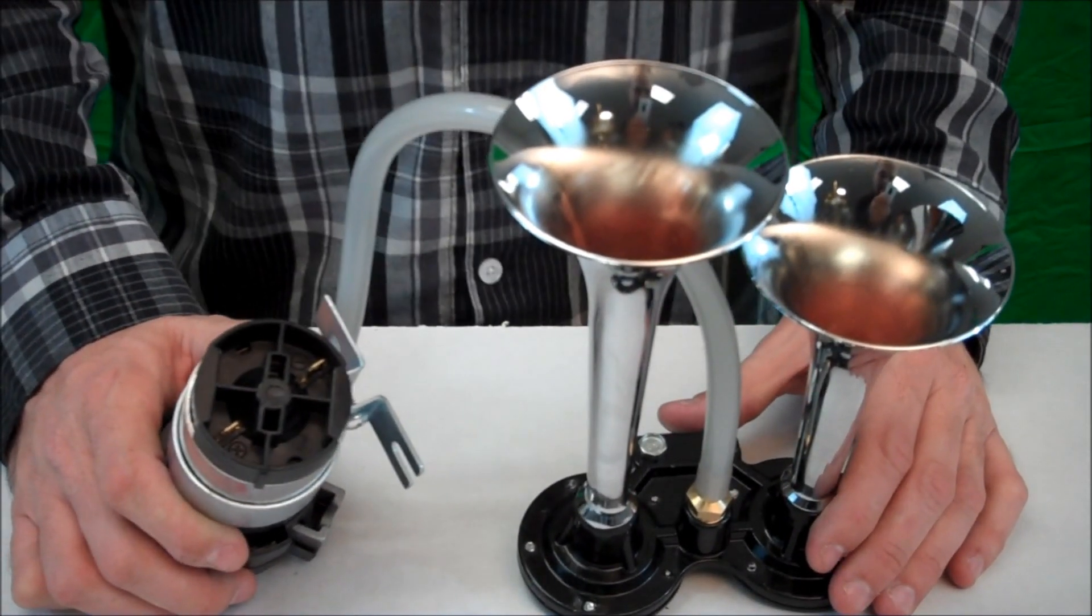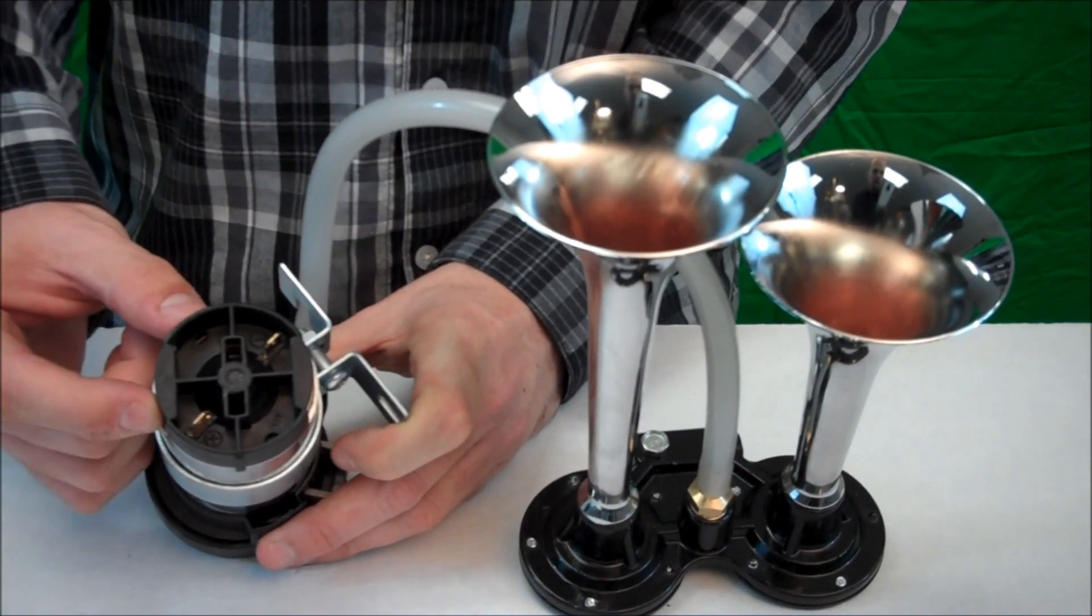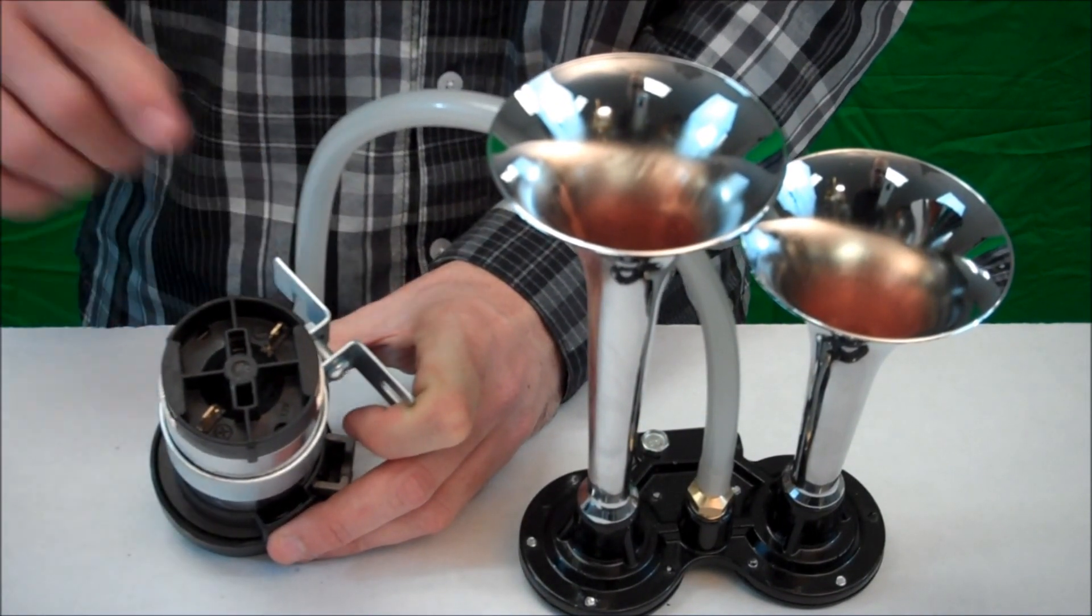Connecting the solenoid to the car is a very simple process. It's a two-wire installation. Your power wire is going to go to the positive sign, your ground wire is going to go to the negative.